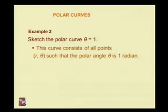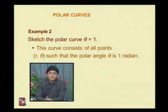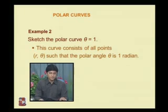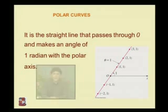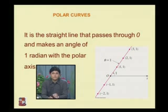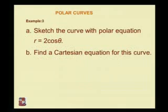Second example: sketch the polar curve theta = 1. This curve consists of all points (r, θ) such that the polar angle theta is 1 radian. It is a straight line that passes through the origin and makes an angle of 1 radian with the polar axis.